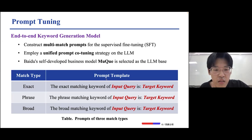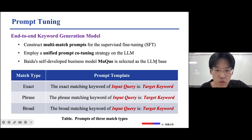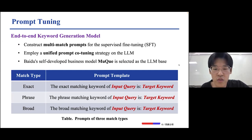We employ a unified prompt co-tuning strategy on the LLM. Baidu's business model is selected as the LLM backbone, which incorporates the business corpus and hierarchical prompt learning mechanism in the pre-training stage.